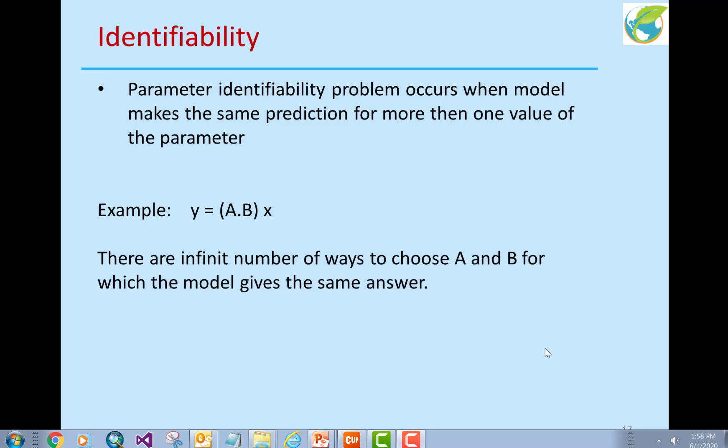The next thing I want to share with you is the identifiability issue. Parameter identifiability problem occurs when a model makes the same prediction for more than one value of the parameter. For example, if I have a function like y equals A times B times x, then there are infinite number of ways to choose A and B.